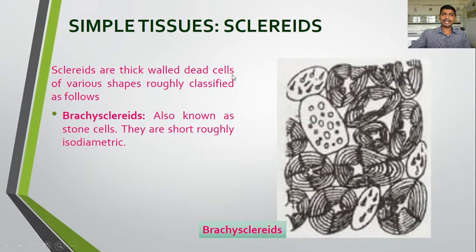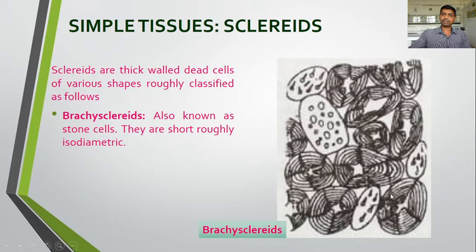Sclerides are thick-walled dead cells — short cells of various shapes, roughly classified as brachysclerides, also known as stone cells. If you see the shape of these cells, it looks like a stone which is highly lignified. They are short and roughly isodiametric; brachysclerides are also called stone cells where deposition of lignin is shown. The cells are thick-walled dead cells of various shapes that look like a stone, so they are also known as stone cells.